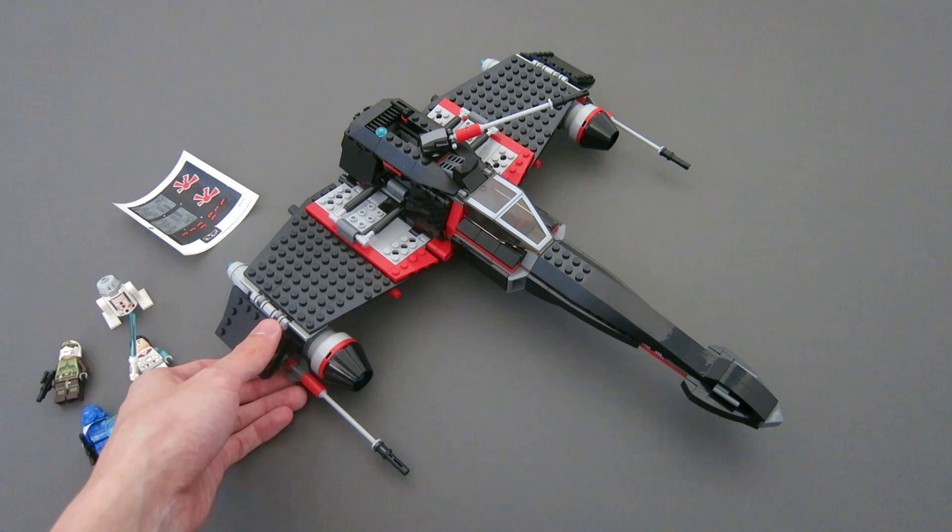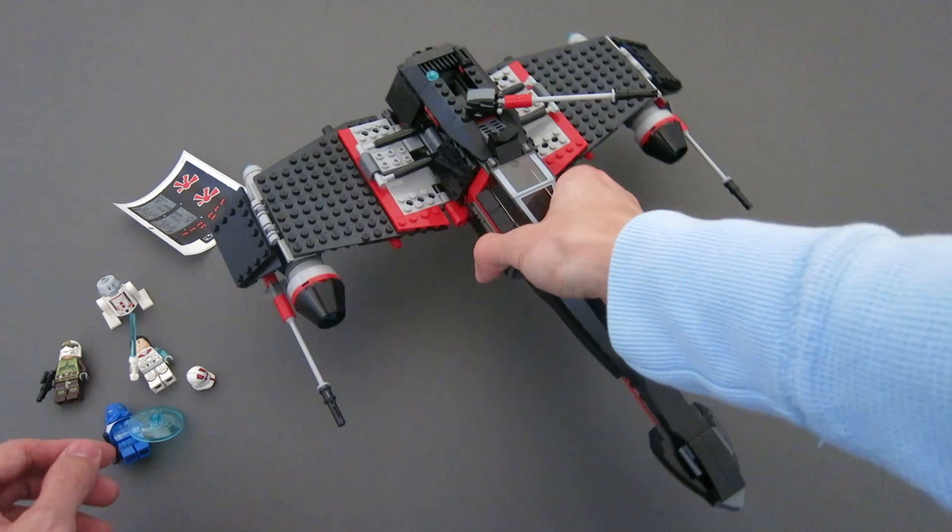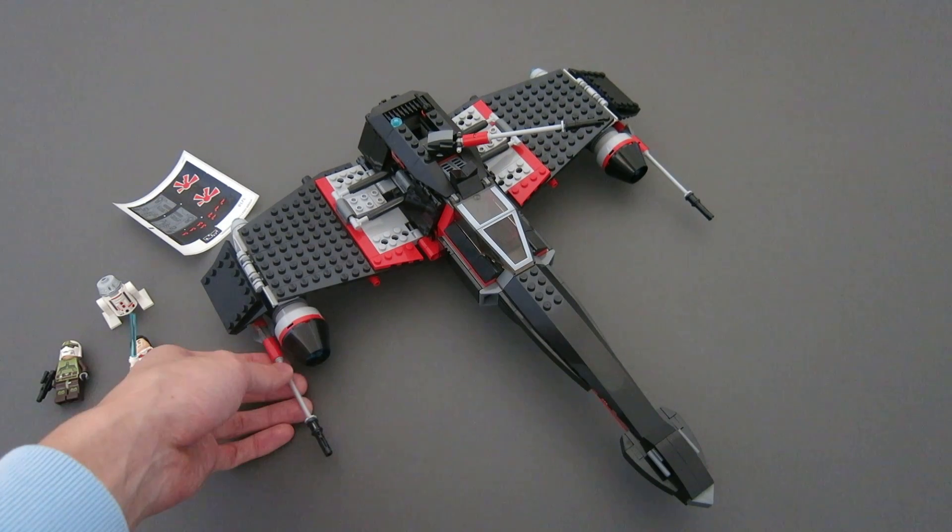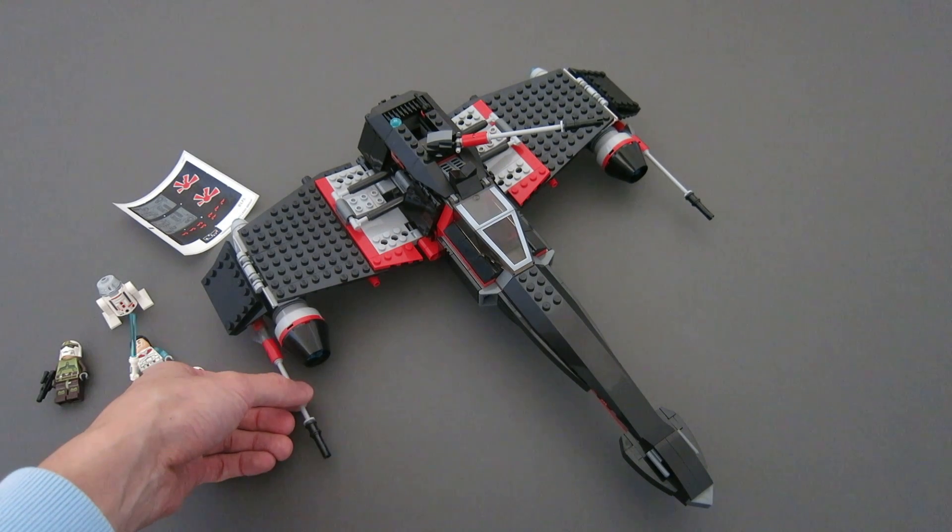This is the Jek-14 stealth starfighter. It has 532 pieces and costs $69.99, quite an expensive set for a starship of this size. But nowadays Star Wars sets have increasing value, and 70 bucks is about what you get.